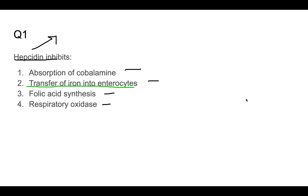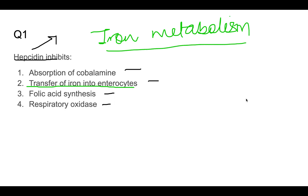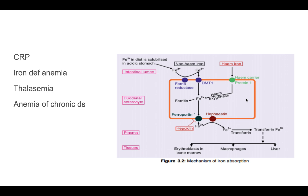You should know that hepcidin is involved in iron metabolism, and it inhibits the transfer of iron into the enterocytes. Here you can see hepcidin inhibits the iron absorption.